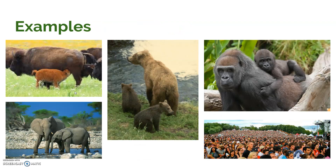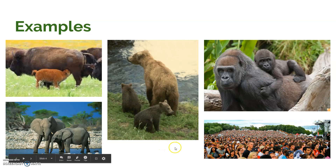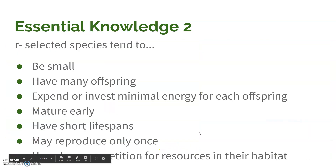Some examples might be bisons, elephants, bears, gorillas, and you. We are all K-selected species.